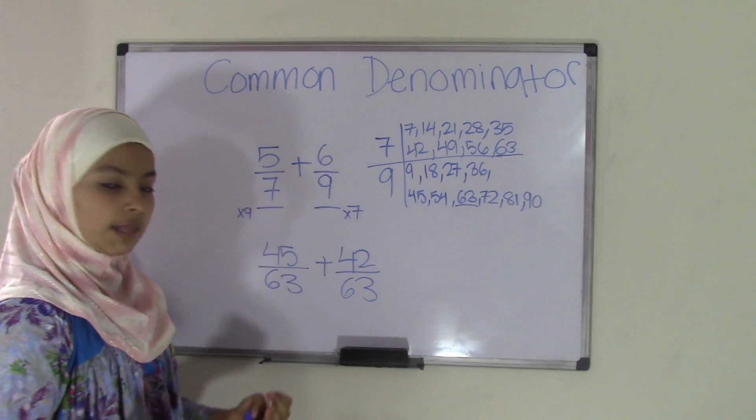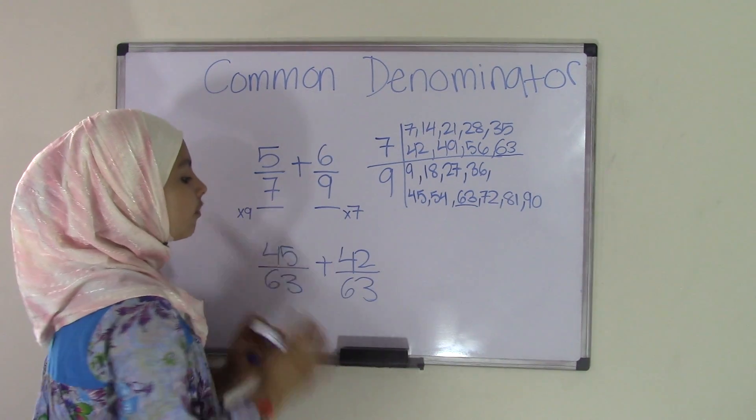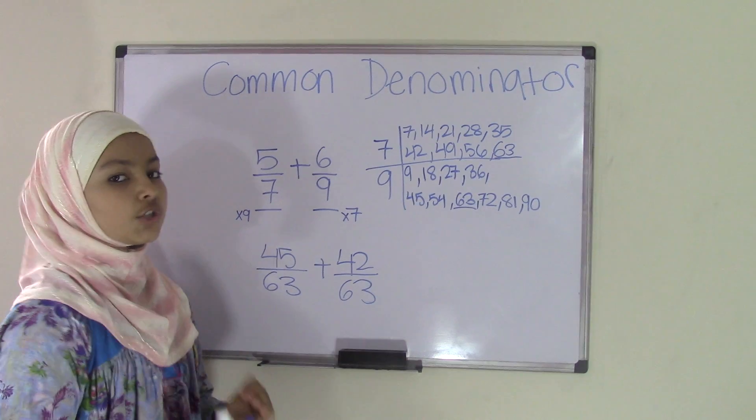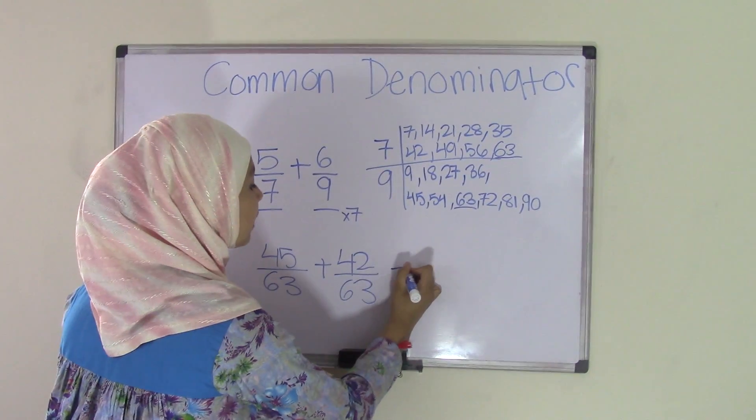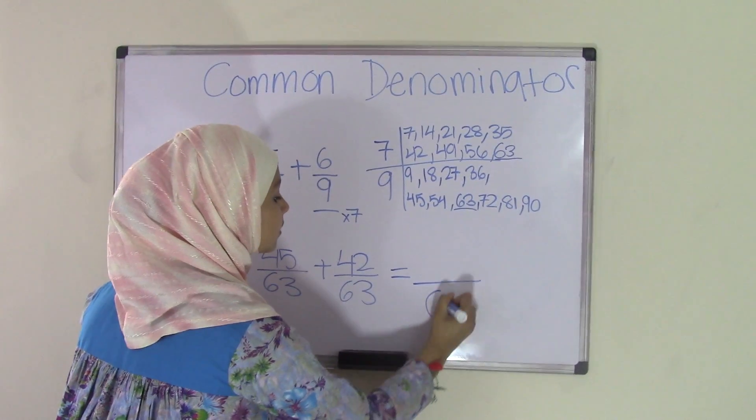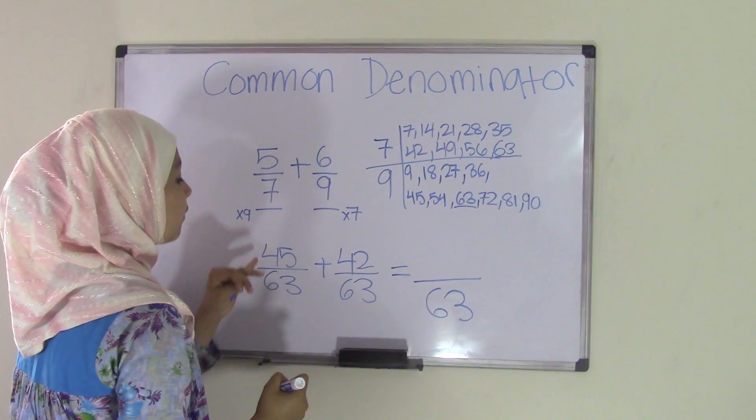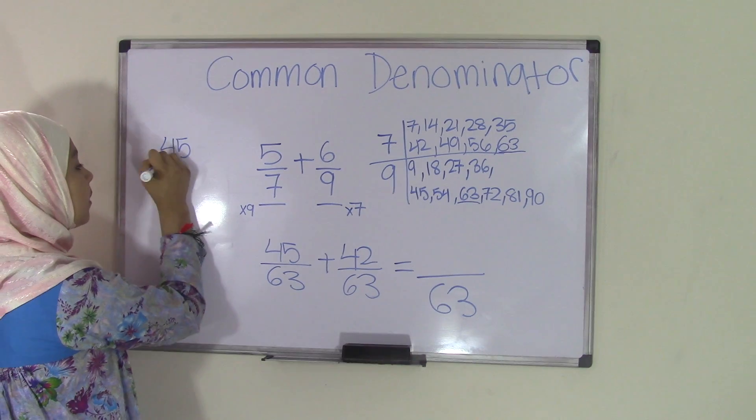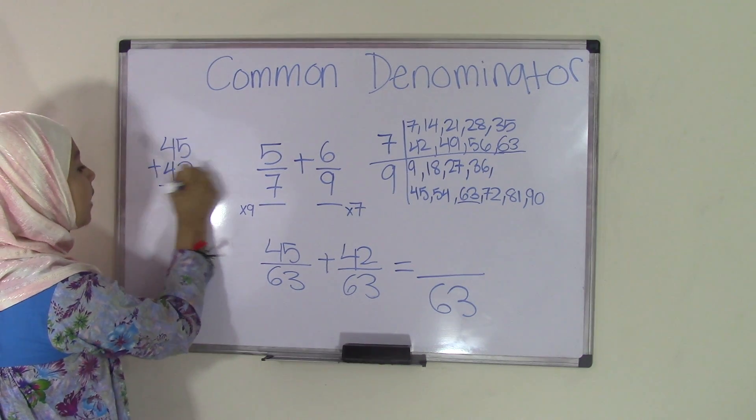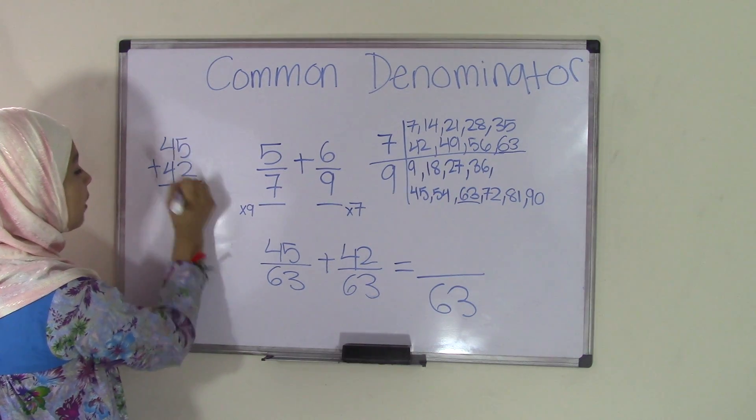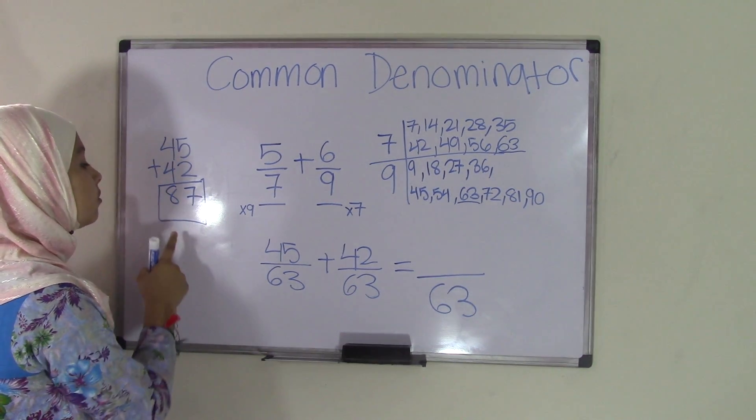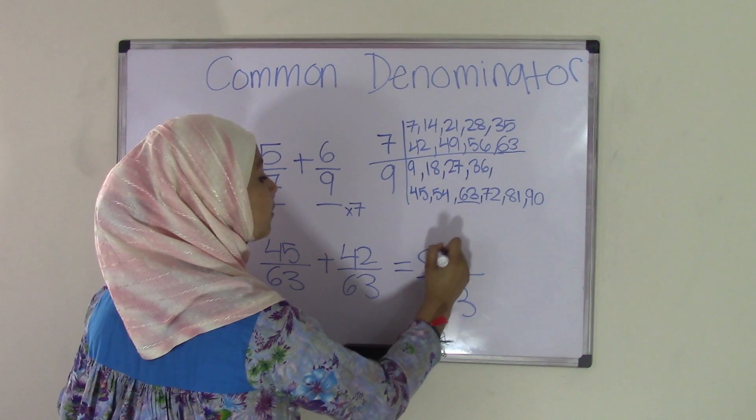Now the last step is you have to add these. Remember, when you are adding or subtracting, the denominators do not change. You're going to keep them just the way they are. So we're going to write down 63 as the denominator and add 45 plus 42. If we do 45 plus 42, 5 plus 2 is 7, 4 plus 4 is 8. So the sum equals 87. That means 45/63 plus 42/63 equals 87/63.